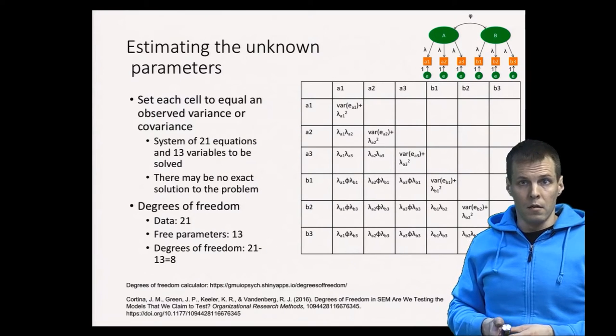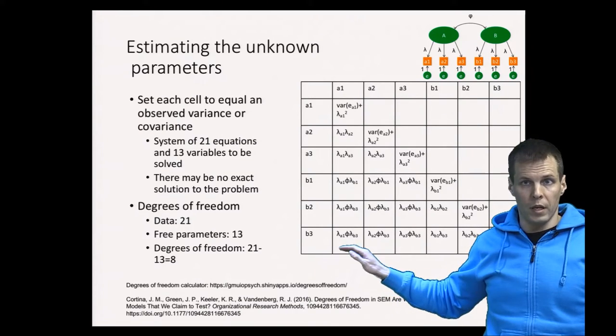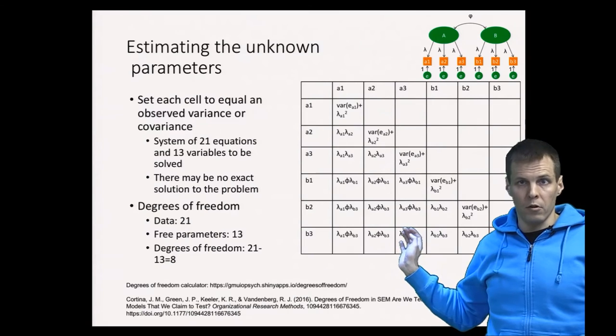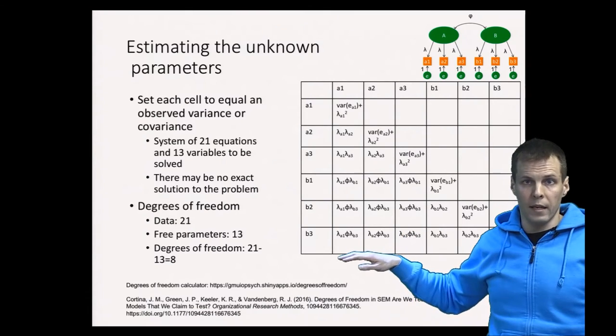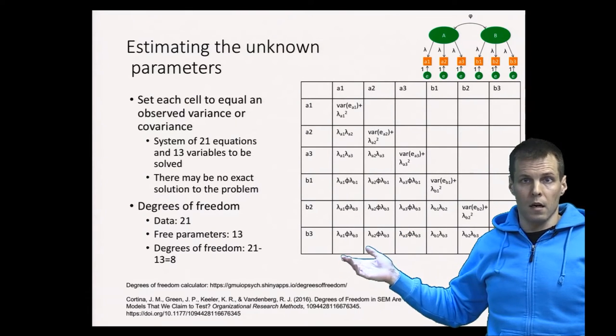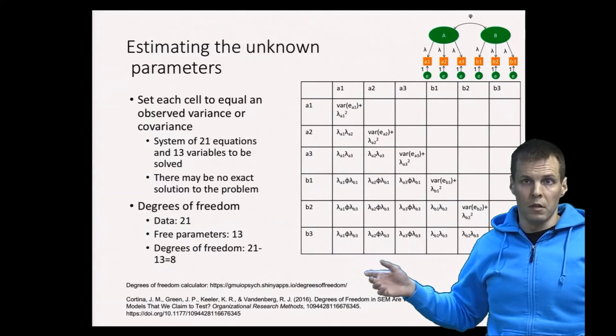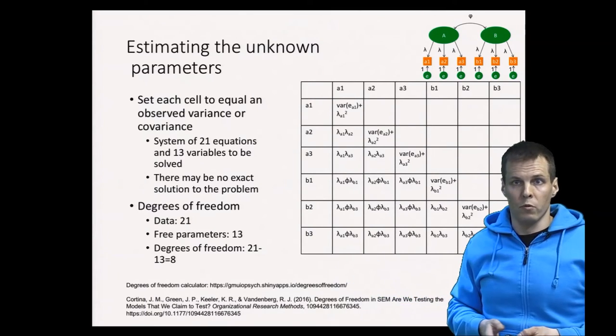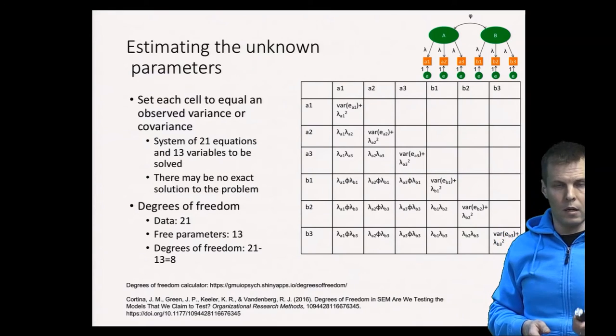We could take a sum of squares, which would be the unweighted least squares estimator. Typically, we take a weighted sum of these implied correlations minus the observed correlations, and a particular set of weights produces the maximum likelihood estimate.